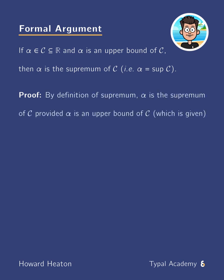by the definition of supremum, alpha is the supremum of C, provided alpha is an upper bound of C, which is given, and each beta less than alpha is not an upper bound of C. So there are two properties that must hold, and one of them was given.